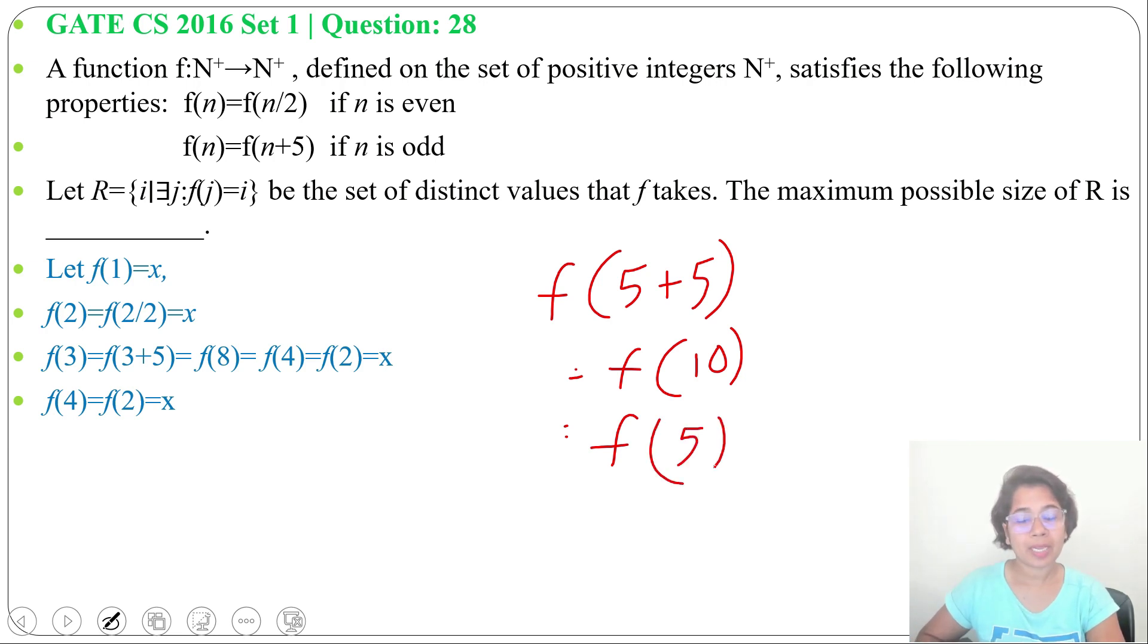Let f(5) = y, as this is minimum. Now we cannot divide - it's odd and it is the minimum. So let f(5) = y.